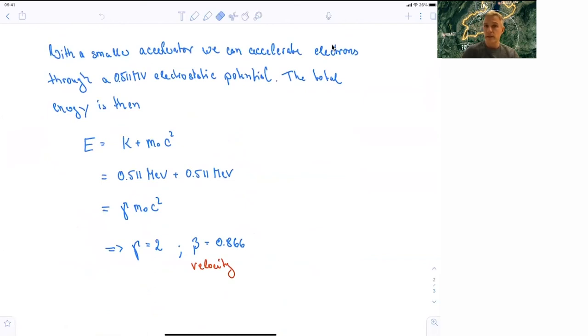The total energy then is, again, the kinetic energy plus the rest energy, which is, in this example, 0.511 MeV plus 0.511 MeV. And so here we find the gamma factor of 2 and the velocity of 0.866.